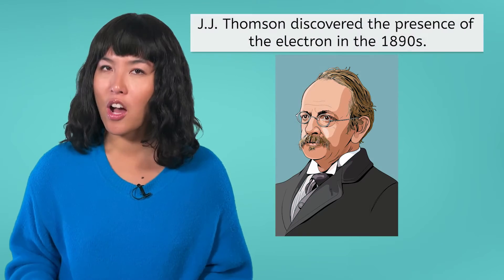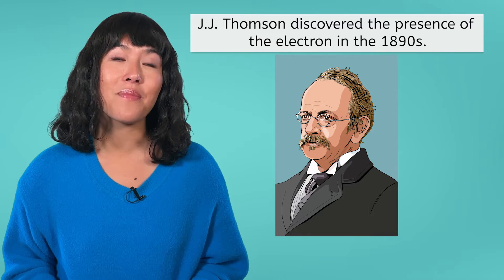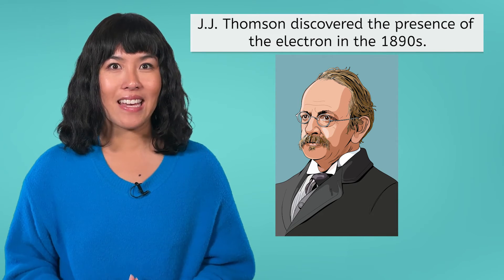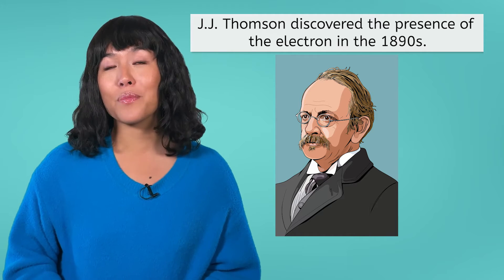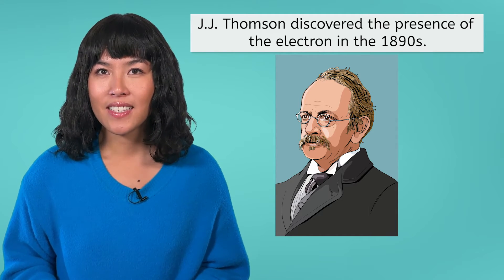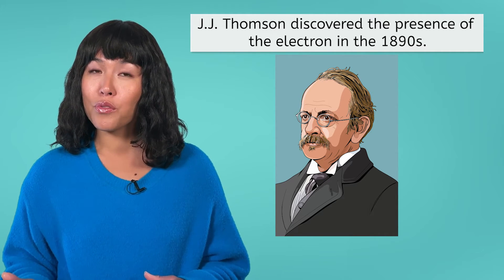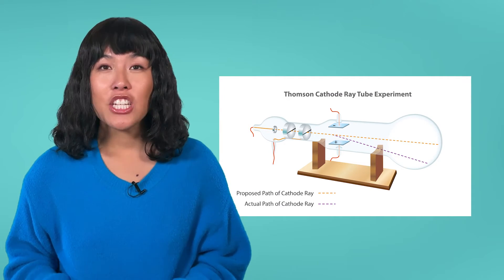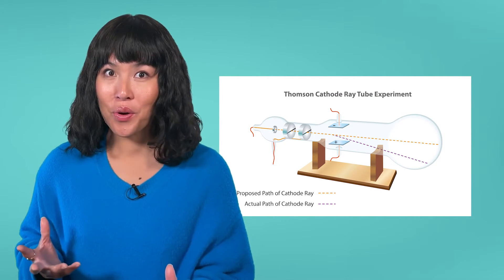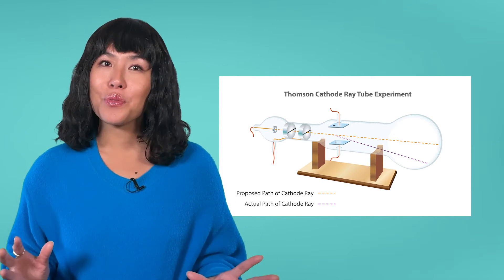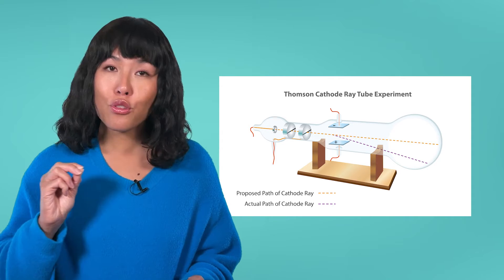The first subatomic particle to be discovered was the electron in the 1890s by J.J. Thompson. A subatomic particle is something that makes up an atom — in this case, the electron. Before J.J. Thompson's experiments and discovery in the 1890s, the atom was viewed as a solid sphere, but J.J. Thompson proved that there was more to an atom than that. In his experiment, J.J. Thompson used a machine called a cathode ray tube to shoot a beam of particles, called a cathode, through a tube. Without any outside influences, the beam will go straight through the tube.